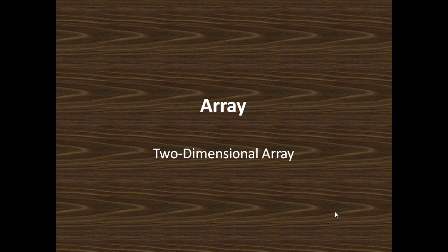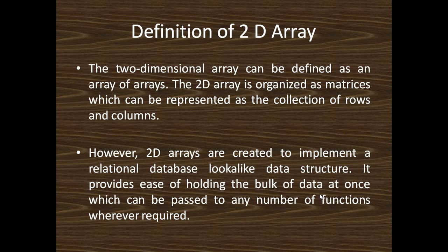Now I will describe what is a two-dimensional array. The definition of a 2D array can be defined as an array of arrays. The 2D array is organized as a matrix, which can be represented as a collection of rows and columns. 2D arrays are created to implement a relational database and data structures. It provides ease of holding bulk data at once, which can be passed to any number of functions.